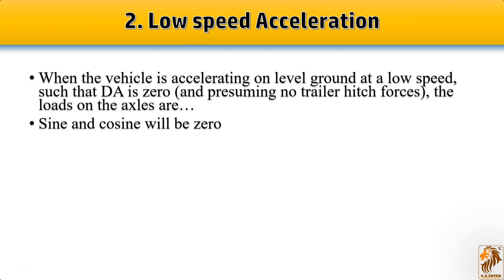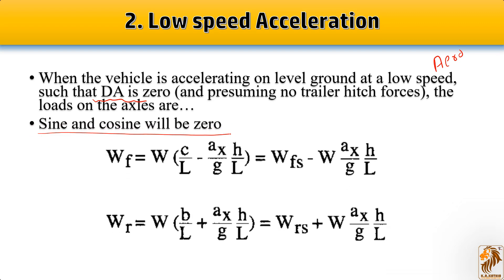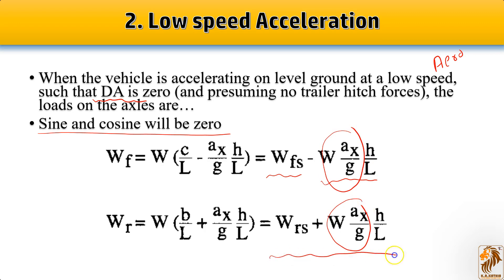For the second case — low speed acceleration — the vehicle is on level ground, so we consider the aerodynamic force Da as zero and the sine and cosine slope components also as zero. The conclusion we get is: Wfs = W − (a·g·h)/L, where D'Alembert's force is now being considered.